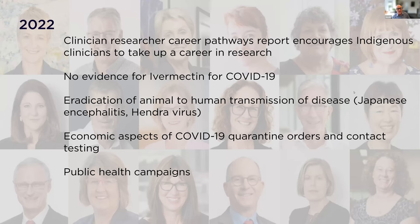Fast forward to 2022, and there are now 13 women and 11 men in NHMRC council. Yet 83 years later, some of those issues are still there: NHMRC released a clinician researcher pathways report encouraging clinicians — particularly indigenous clinicians, allied health, midwives, and nurses — to take a career in research. The miracle cure for tuberculosis has been replaced by ivermectin. Animal-to-human disease transmission still exists with Japanese encephalitis. And we're again focusing on the economic aspects of COVID quarantine orders and public health campaigns.